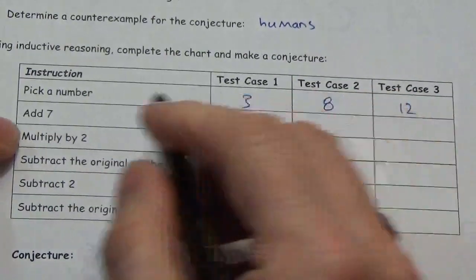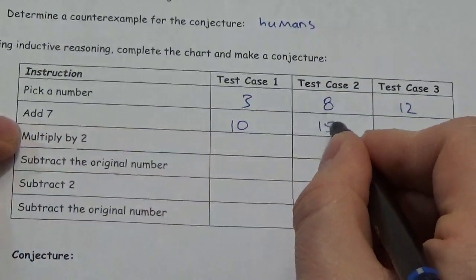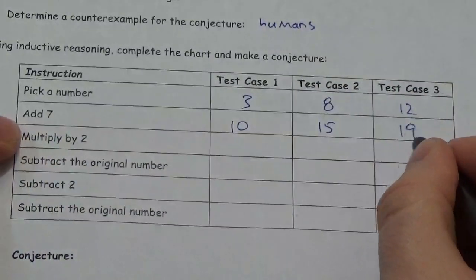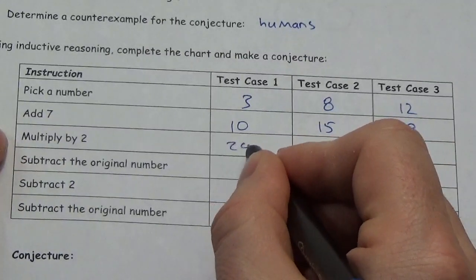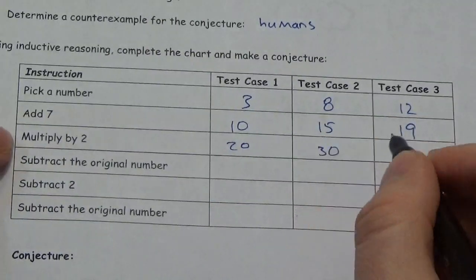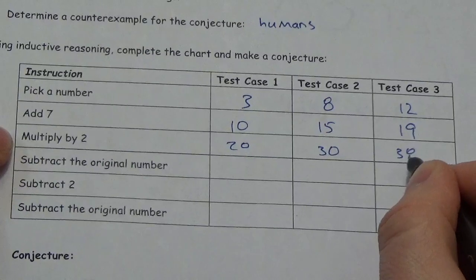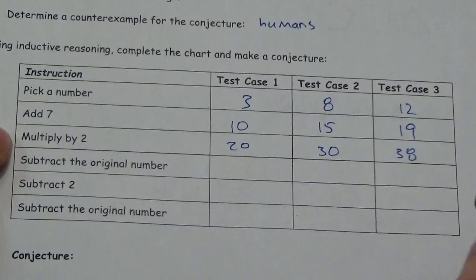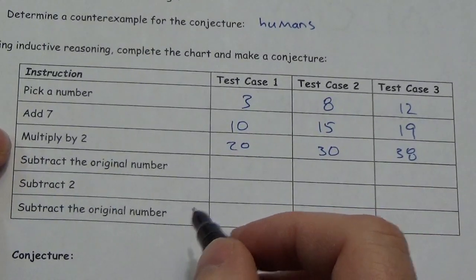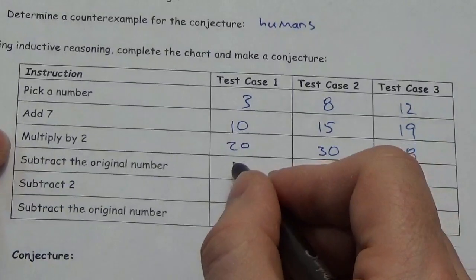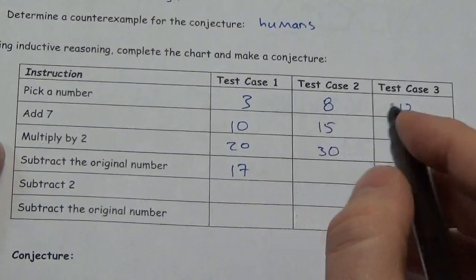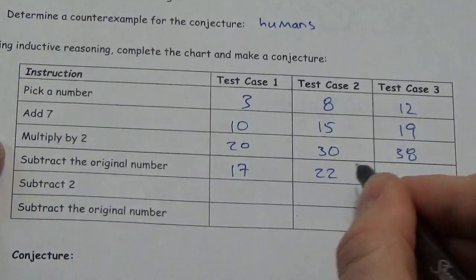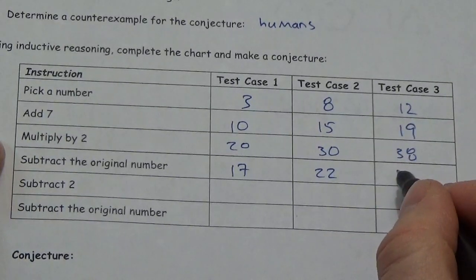So that's going to be ten. Add seven. That's going to be fifteen. Add seven. That's going to be nineteen. Multiply by two. So that is going to be twenty. That's going to be thirty. That is going to be thirty-eight. Subtract the original number. That's going to be seventeen. That is going to be twenty-two. That is going to be twenty-six.